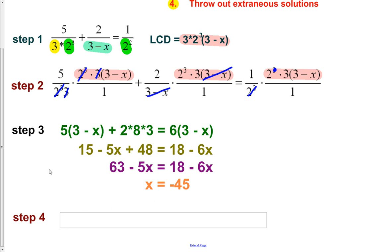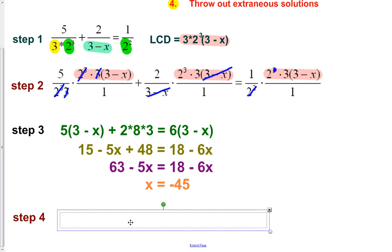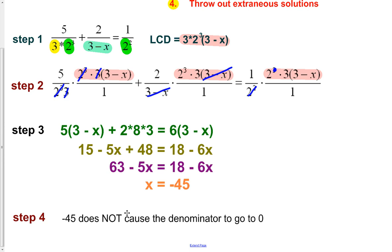Once we get our value x equals negative 45, we need to make sure in our last step that it doesn't cause any denominators to go to 0. Looking back at the original equation, if we put negative 45 in for x, that causes the denominator to go to a positive 48 — not 0. So that's not a problem. Therefore, x equals negative 45 is our final answer.